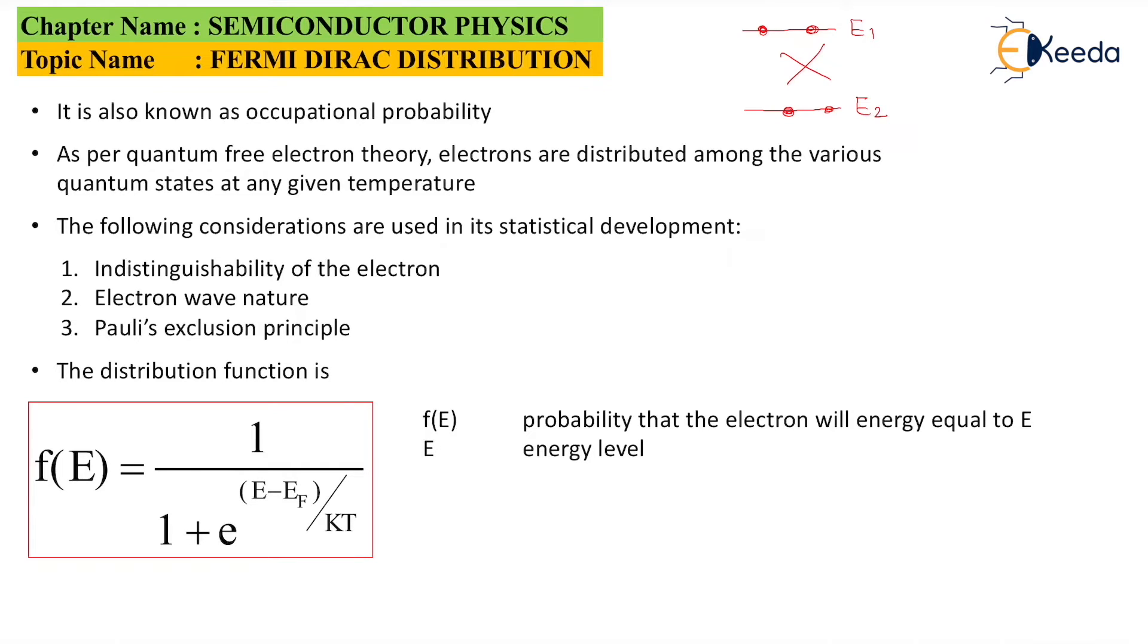E is nothing but the energy level, EF is the Fermi energy, K is Boltzmann constant. You need to remember its value: 1.38 times 10 raised to power minus 23 joules per Kelvin. T is of course temperature in Kelvin.